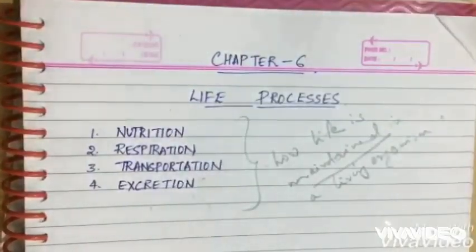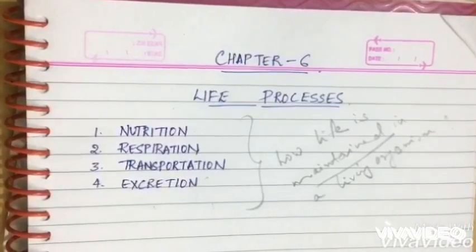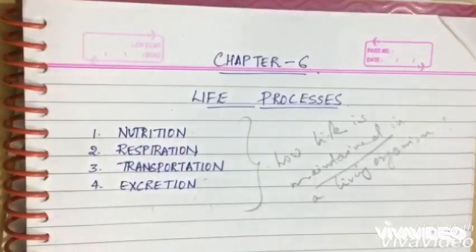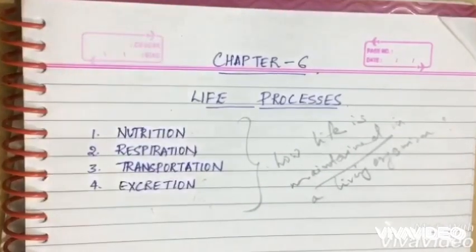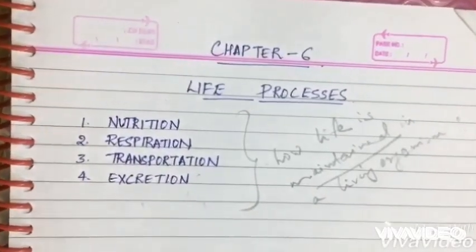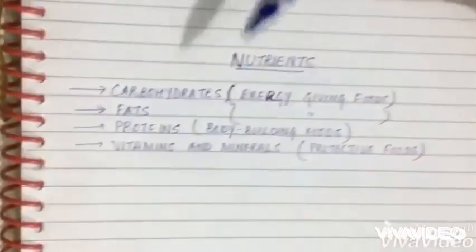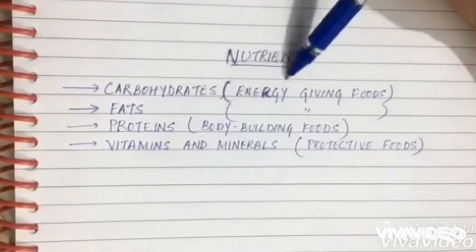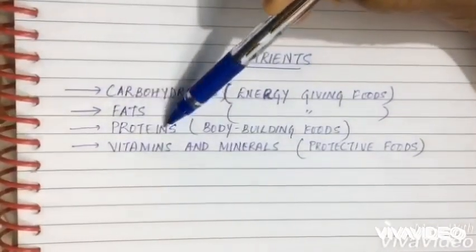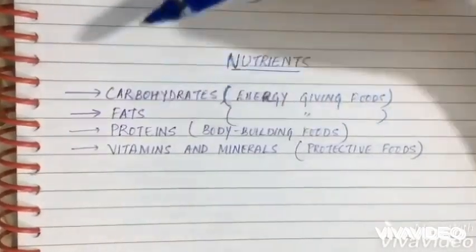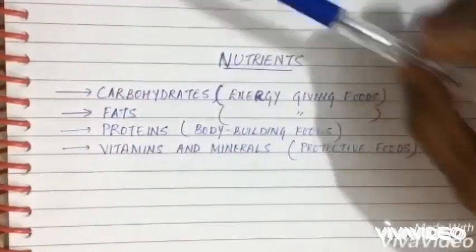First one: nutrition. What is nutrition? Nutrition means taking nutrients into the body from the external environment. What is a nutrient? Nutrients are carbohydrates — that is, the energy-giving foods — fats, which are also energy-giving nutrients, proteins, vitamins, and minerals. Proteins are the body-building foods, and vitamins and minerals are the protective foods.